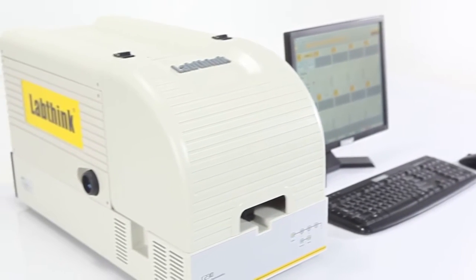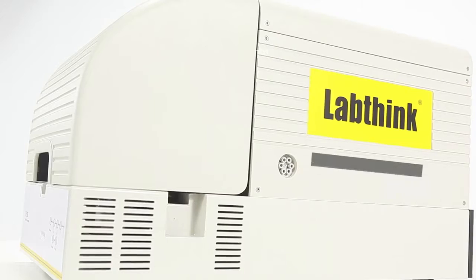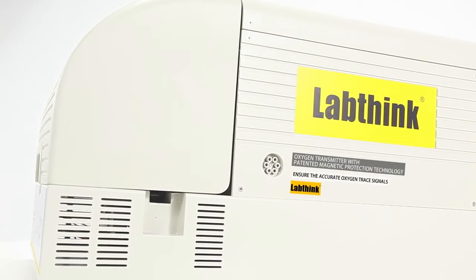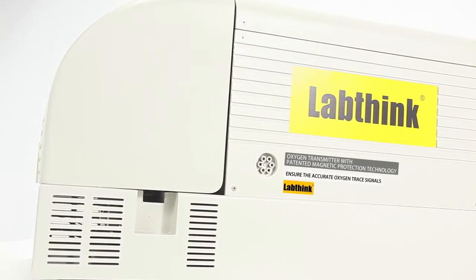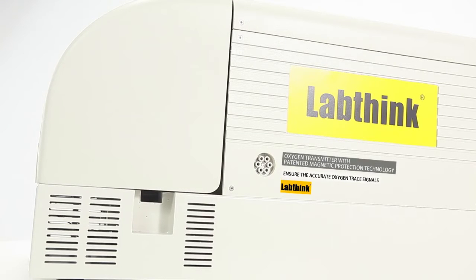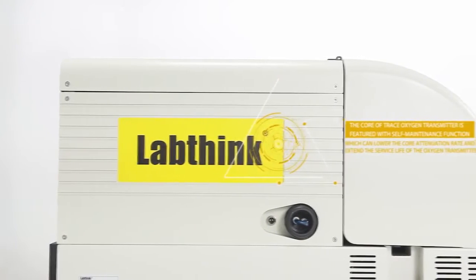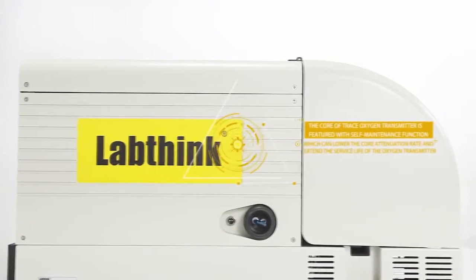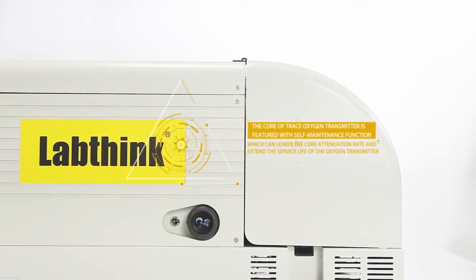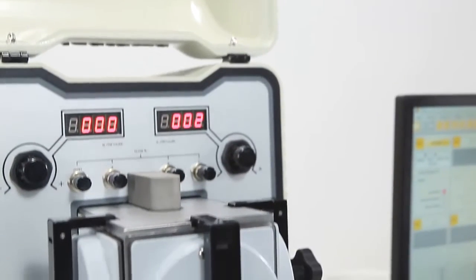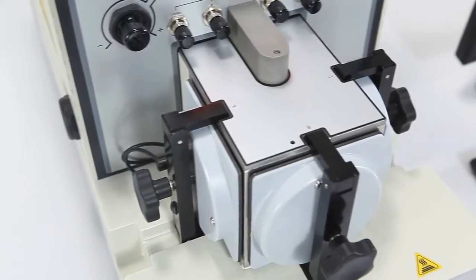C230 uses a high precision trace oxygen transmitter with patented magnetic protection technology, which can insulate external electromagnetic interference to the sensor and ensure accurate oxygen trace signals. The core features self-maintenance function which lowers the core attenuation rate and extends service life. C230 is featured with Labthink's innovative core control technology, enabling high resolution and sensitivity oxygen testing.